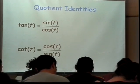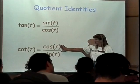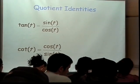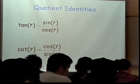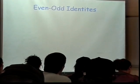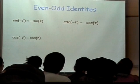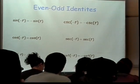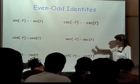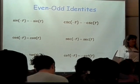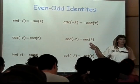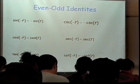The tangent is the sine of the angle divided by the cosine of the angle, and the cotangent is the cosine of the angle divided by the sine of the angle. You've seen all these before. We also went through the even-odd identities. The sine and cosecant, the tangent and cotangent were all odd functions, and the cosine and secant were even functions — that's what those identities are telling you.